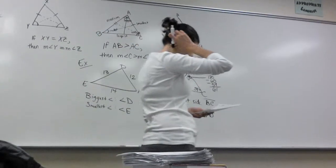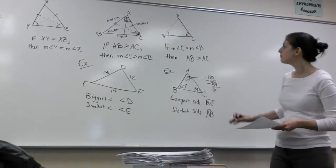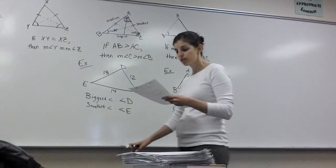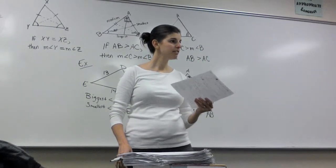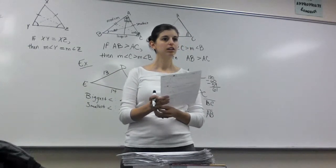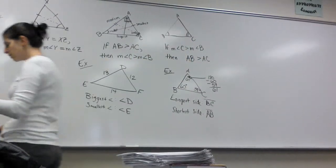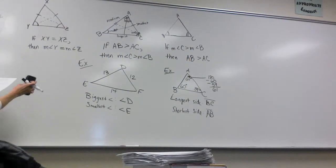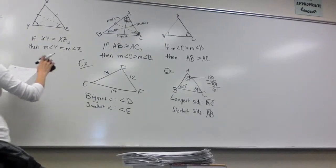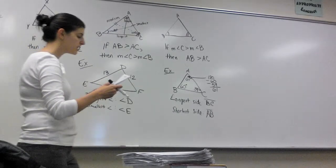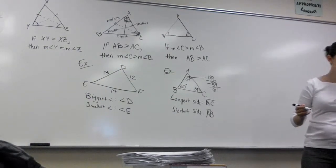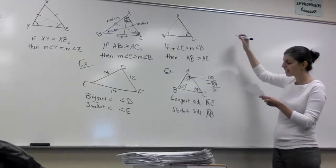On the back — the Exterior Angle Inequality Theorem. The exterior angle of a triangle is greater than either of the two non-adjacent interior angles. That's a lot of words — 'greater than' goes in the blank.